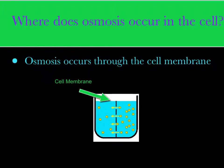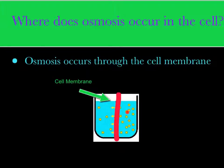Where does osmosis occur in the cell? Osmosis occurs through the cell membrane. In this picture, the cell membrane is right here. The water molecules travel from inside the cell to outside the cell, following the rule that in order to diffuse water through a cell membrane, they must go from high to low.